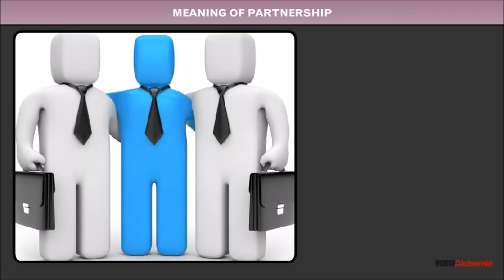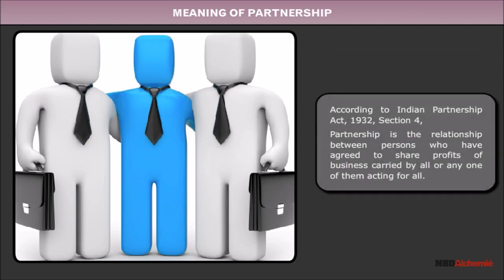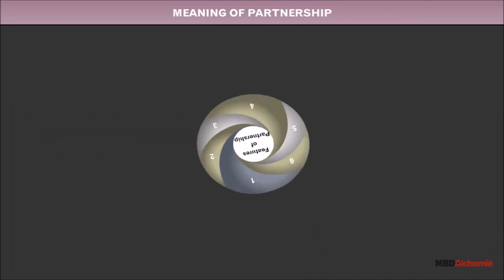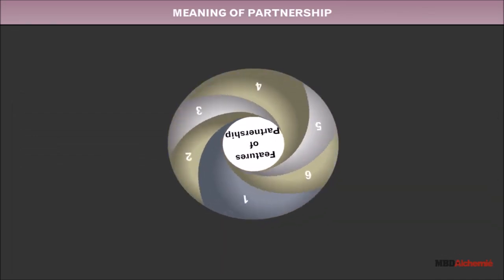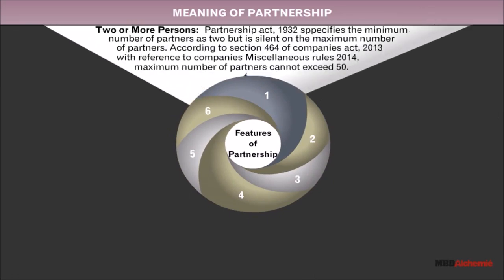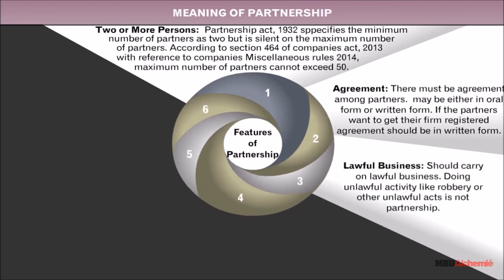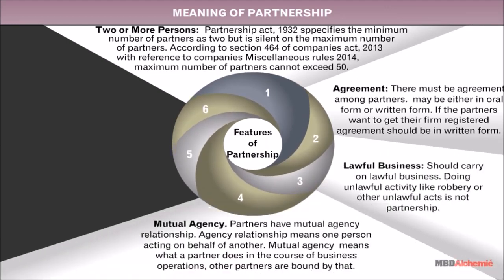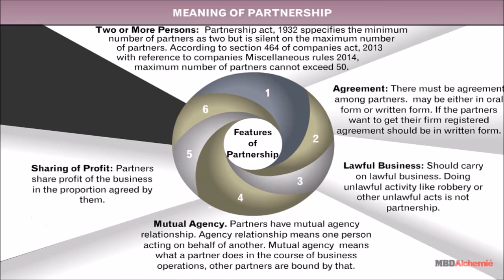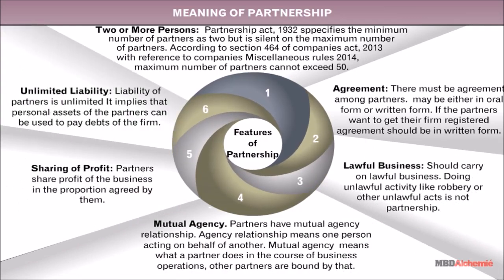Meaning of partnership: According to Indian Partnership Act 1932, Section 4, partnership is the relationship between persons who have agreed to share profits of a business carried on by all or any one of them acting for all. Features of partnership include: two or more persons, agreement, lawful business, mutual agency, sharing of profit, and unlimited liability.